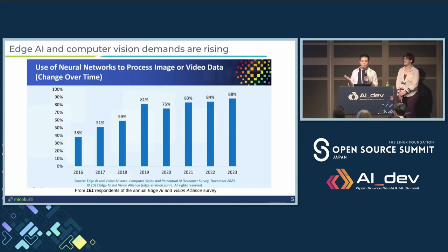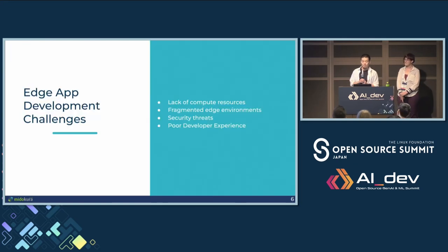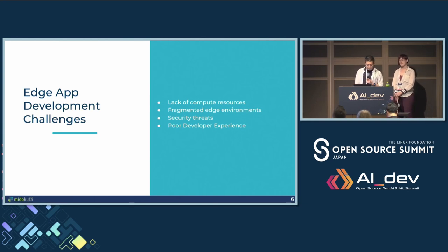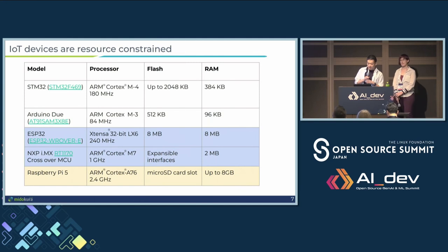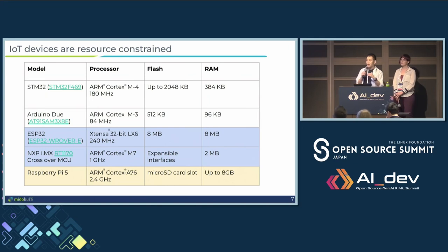So what does it take to do this? It's not just running AI inference at the edge — it also requires building an application for it. What makes edge app development difficult? The first reason is pretty obvious: IoT devices are very resource constrained. When I say edge, I'm including the constrained edge — not just the network edge, but MCUs.